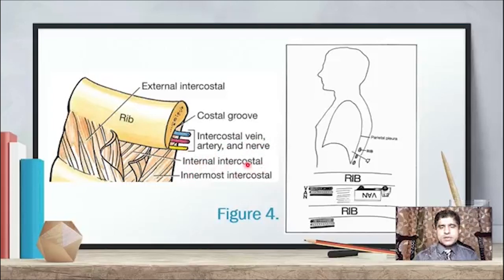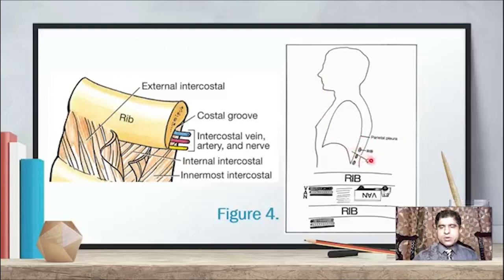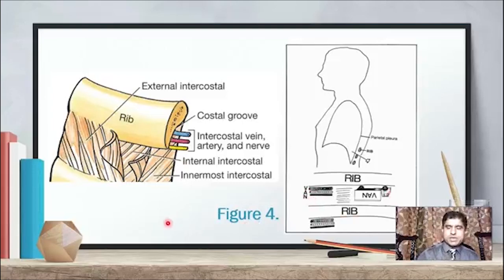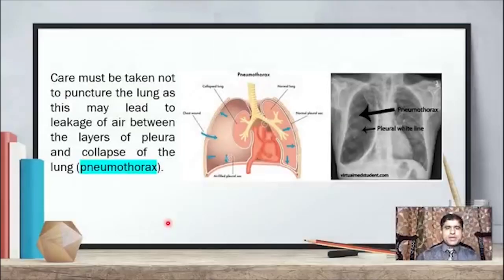As shown in the figure here, this is the rib with the costal groove where the intercostal vein, artery, and nerve pass through. The parietal pleura is visible in the figure near the rib. The sample must be taken carefully from the recess. Care must be taken not to puncture the lung.